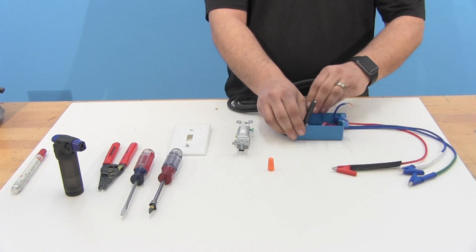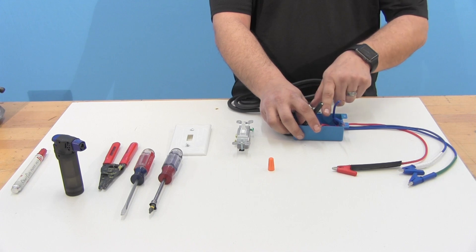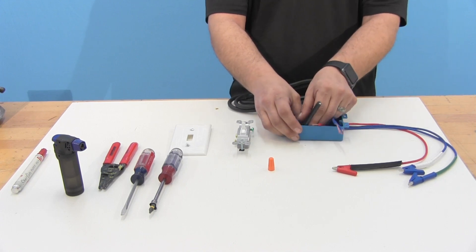Once you have those in there, you can start stripping your wires back. You'll need enough to be able to wrap them around the switch and then enough to combine your grounds together as well.